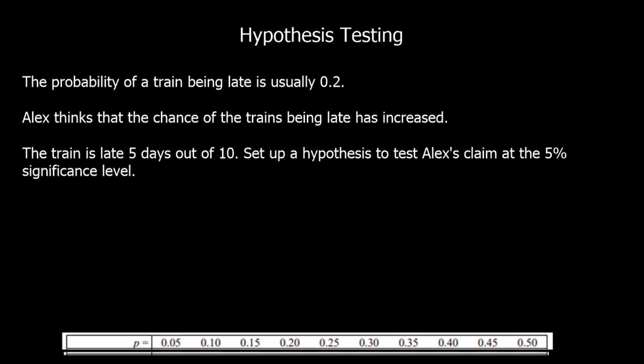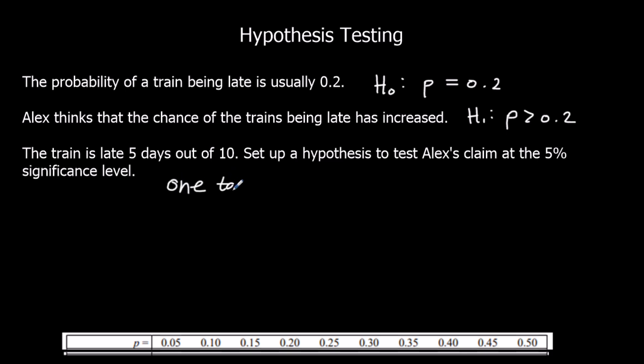Now we're going to look at going the whole way through the hypothesis testing process. The probability of a train being late is usually 0.2 — that is our null hypothesis, that the probability is 0.2. Alex thinks the chance of the trains being late has increased, giving us our alternative hypothesis that the probability is bigger than 0.2, so it's a one-tail test. We're going to run a test at the 5% significance level, looking at the 5% most extreme values to identify our critical region.